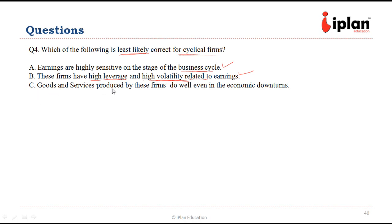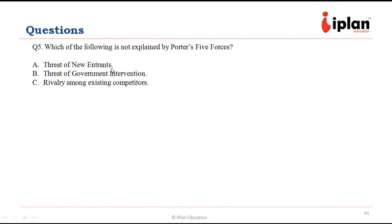Option C says goods and services produced by these firms do well in economic downturns. This is wrong — since cyclical firms are dependent on the business cycle, during economic downturns they do not do well. So C is the right option.